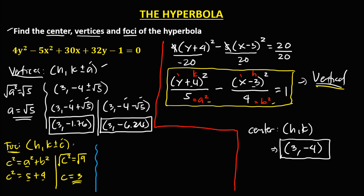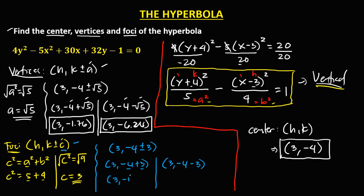Now we can find the coordinates of the foci. With h equals 3, k equals negative 4, and c equals 3: the first focus is (3, negative 4 plus 3), which is (3, negative 1). The second focus is (3, negative 4 minus 3), which is (3, negative 7). These are the coordinates of the foci.